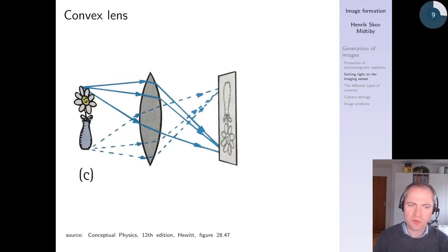If you introduce optical elements like a convex lens in this case, you are actually able to collect light that emits from the object in different directions, and then the lens will collect them and focus them on a single point in the generated image. So in this way we're able to collect a lot more light than we otherwise would be able to, and still get a sharp image.